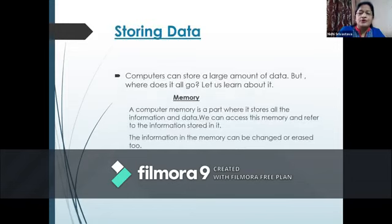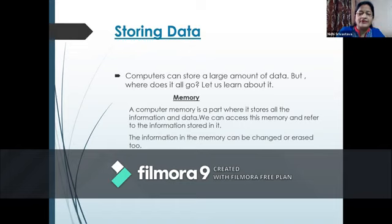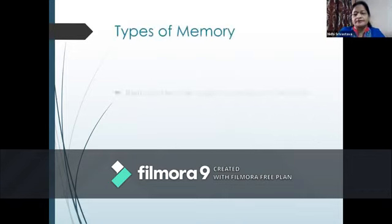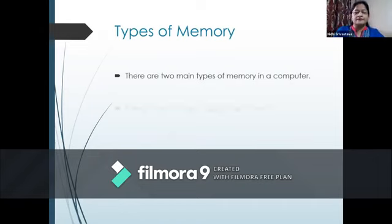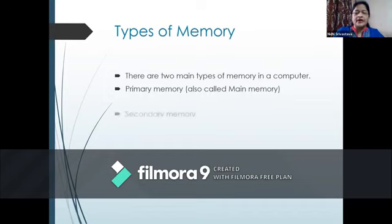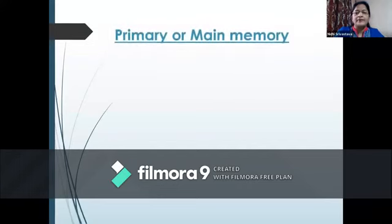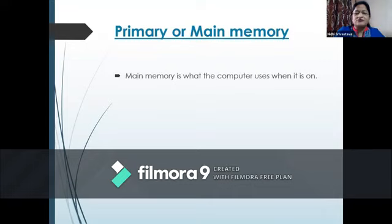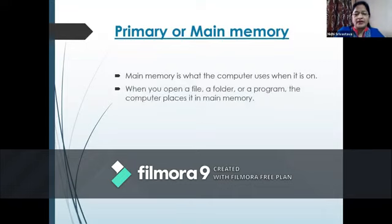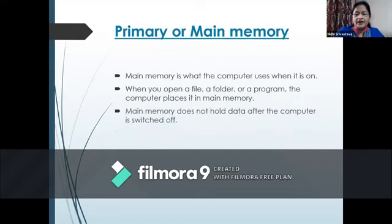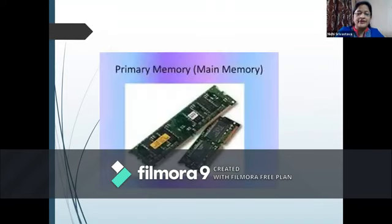Storing data. Computers can store a large amount of data, but where does it all go? Let us learn about it. Memory. A computer memory is the part where it stores all the information and data. We can access this memory and refer to the information stored in it. The information in the memory can be changed or erased too. There are two main types of memory in a computer: primary memory, also called main memory, and secondary memory. Main memory is what the computer uses when it is on. When you open a file, a folder or a program, the computer places it in main memory. Main memory does not hold data after the computer is switched off.